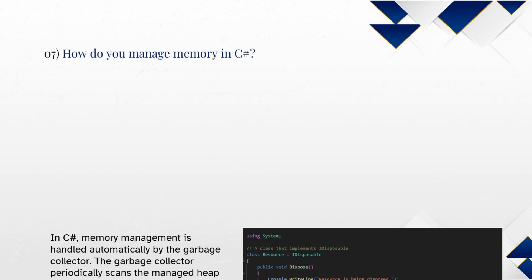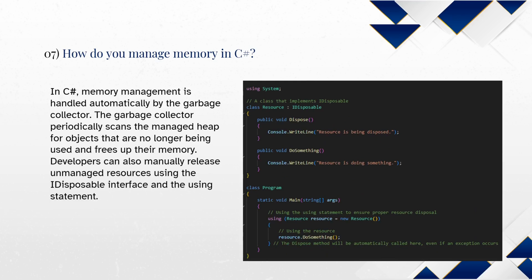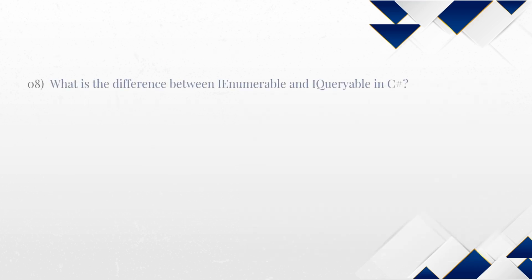How do you manage memory in C-Sharp? In C-Sharp, memory management is handled automatically by the garbage collector. The garbage collector periodically scans the managed heap for objects that are no longer being used and frees up their memory. Developers can also manually release unmanaged resources using the IDisposable interface and the using statement.